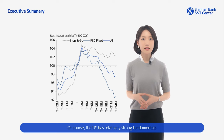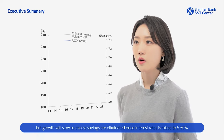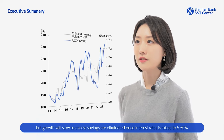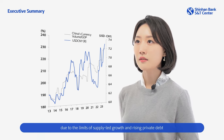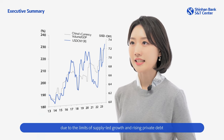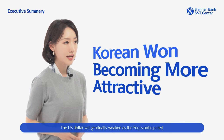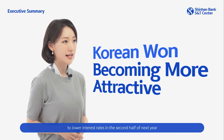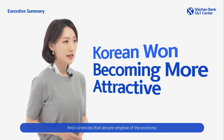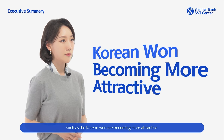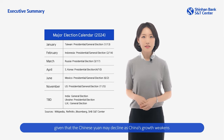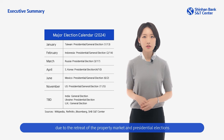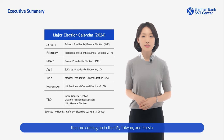The U.S. has relatively strong fundamentals, but growth will slow as excess savings are eliminated once interest rates are raised to 5.5%. China is also in a precarious situation due to the limits of supply-led growth and rising private debt. The U.S. dollar will gradually weaken as the Fed is anticipated to lower interest rates in the second half of next year. Currencies that are preemptive of the economy, such as the Korean won, are becoming more attractive. But a one-sided decline of exchange rates would seem difficult given that the Chinese yuan may decline as China's growth weakens due to the retreat of the property market and presidential elections coming up in the U.S., Taiwan, and Russia.